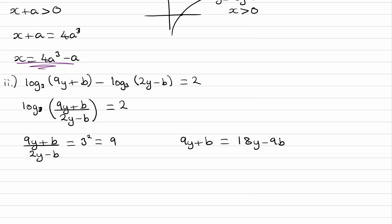And then rearrange. So I'll bring the 9b to the left, bring the 9y to the right. And then we end up with y is equal to 10b over 9. And that is our final solution to part 2.